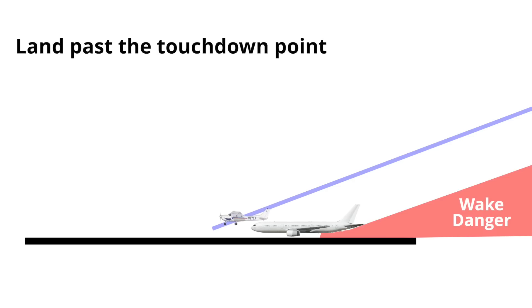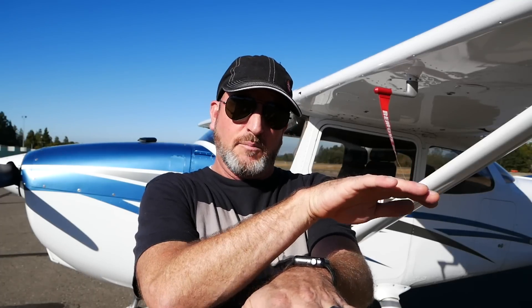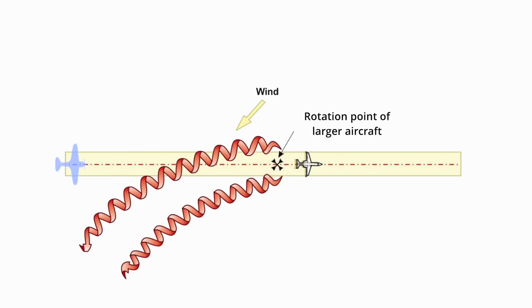It's really important that you have very conservative avoidance procedures, because you can never tell when that little wake is going to hit you in just the wrong spot. When it comes to fixed-wing aircraft, whenever possible you are going to try to land after the point where they touch down — sometimes you can see the smoke that the wheels make and use that as a visual identification point. If you're taking off behind an aircraft, try to outclimb it and stay above its climb path. If that's not possible, see if there's a way you can offset upwind, since those wakes will be drifting downwind.